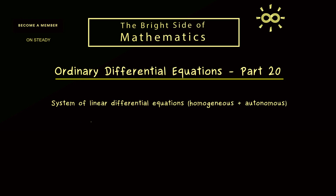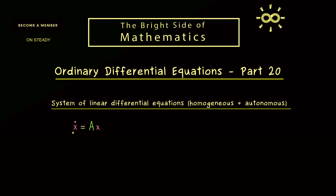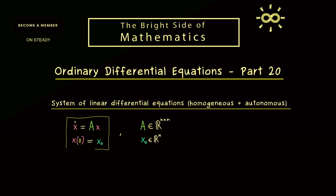In this video we have two restrictions: we only consider systems that are homogeneous and autonomous. Hence our system can simply be written as x-dot equals A times x, where A is an n×n matrix. The system is homogeneous because there is no additive constant, and autonomous because the matrix does not depend on time t. For the initial value problem it's sufficient to consider the starting time at zero, with any starting point x₀ in Rⁿ. The question for today is: how does the solution look?